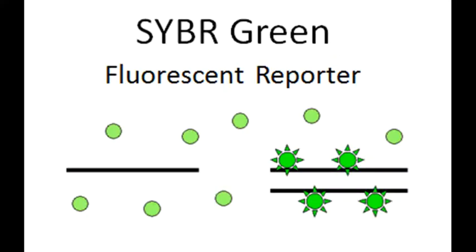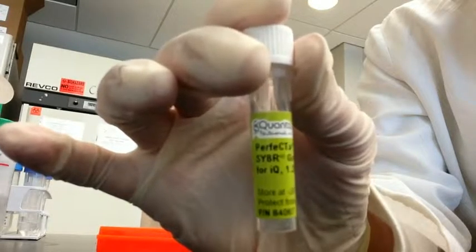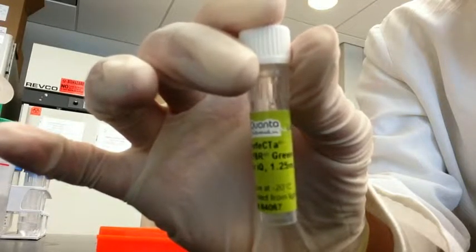CyberGreen, a fluorescent dye that binds to double-stranded DNA formed during the PCR, will be used to allow us to monitor amplification of these target sequences in real time.